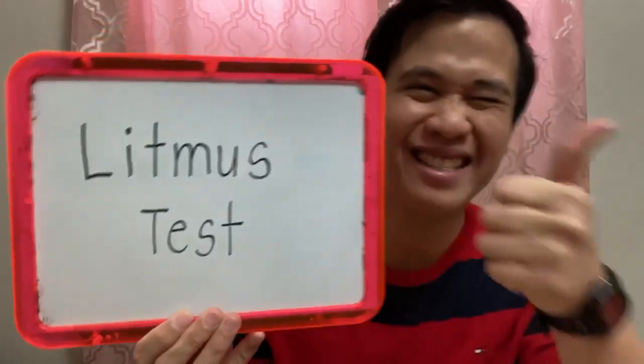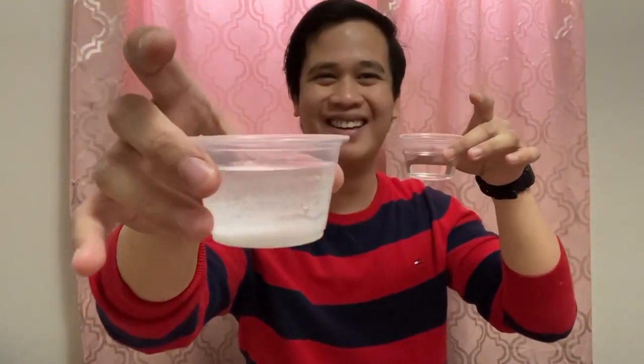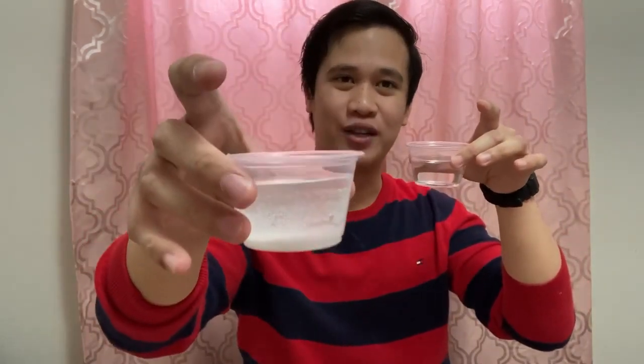Litmus test, let's go! Today we are going to learn how to determine which substance is acidic or basic. I have two substances with me: the clear one is a little cup of vinegar and the whitish substance is baking soda solution.